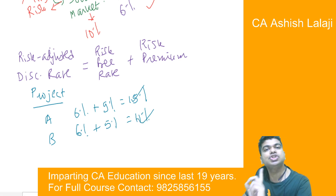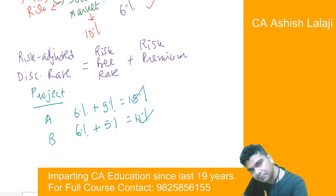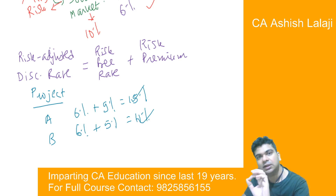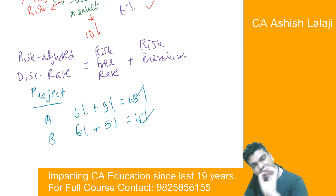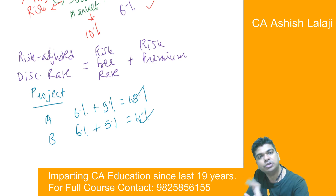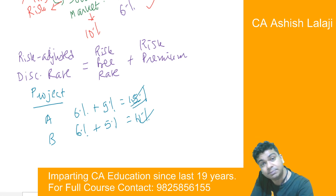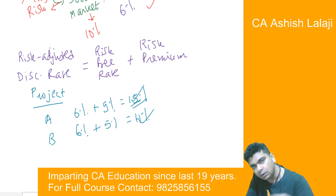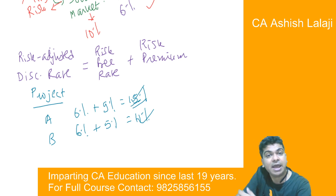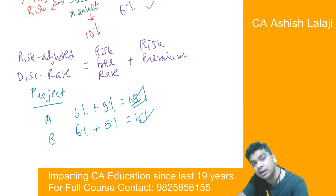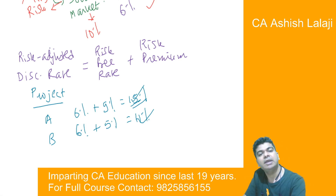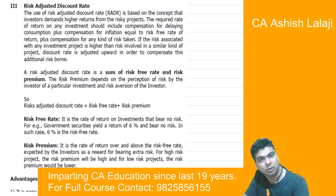The final decision criteria remains the same — I will accept the particular project where the NPV is the highest. It's quite possible that I discount at 15% and still the NPV turns out to be positive, which means the risk is worth taking. Even if I am taking a higher risk, I am still getting a higher NPV and I will go ahead with that project. Wherever the NPV is higher, I will select that particular project.